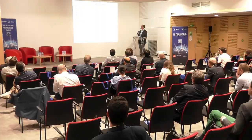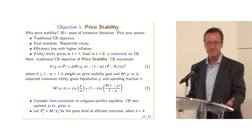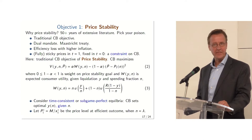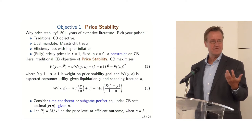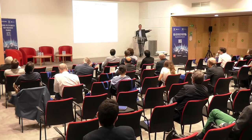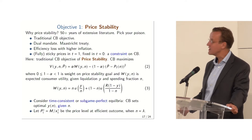Price stability objective. Why do we have a price stability objective for the central bank? There are 50+ years of extensive literature on that topic. It could be a traditional central bank objective, it could be the mandate or treaty — it's in the Maastricht Treaty. It could be that there's efficiency loss with higher inflation — a standard Keynesian argument. You could put that in the model. Or you could just assume that prices are fully sticky in period one — firms can't change prices in period one and just have to match demand.